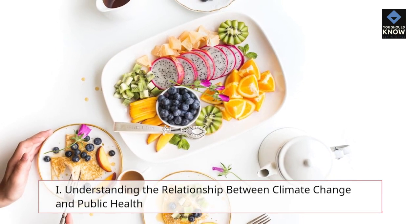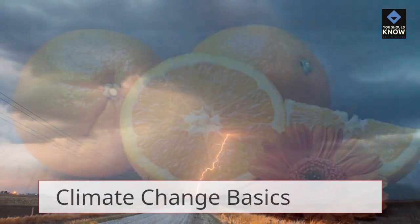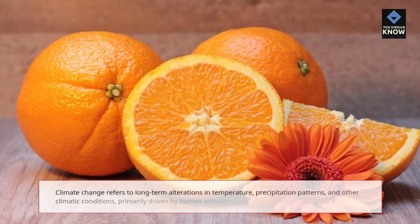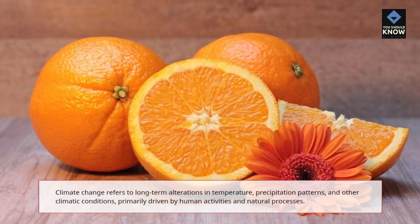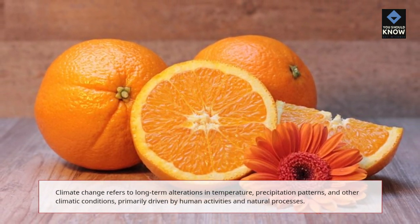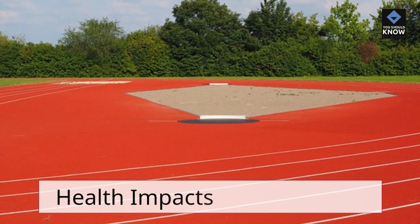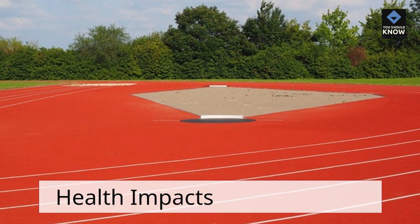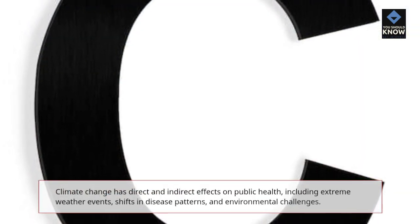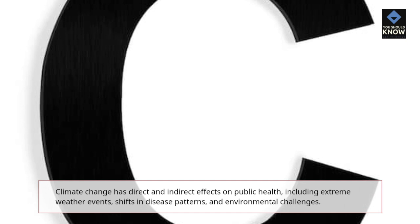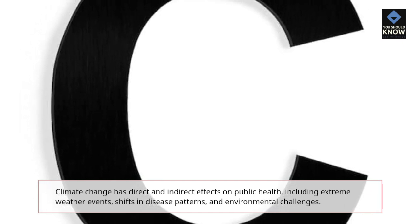Understanding the relationship between climate change and public health. Climate change refers to long-term alterations in temperature, precipitation patterns, and other climatic conditions, primarily driven by human activities and natural processes. Climate change has direct and indirect effects on public health, including extreme weather events, shifts in disease patterns, and environmental challenges.